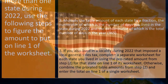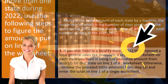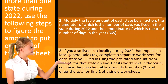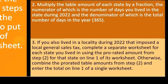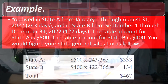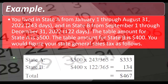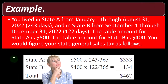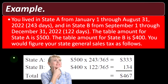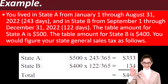Step three: if you also lived in a locality during 2022 that imposed a local general sales tax, complete a separate worksheet for each state, using the pro-rated amount from step two for that state on line one of its worksheet. Otherwise, combine the pro-rated table amounts from step two and enter the total on line one of a single worksheet. For example: you lived in State A from January 1st through August 31st, 2022 — 243 days — and in State B from September 1st through December 31st, 2022 — 122 days. The table amount for State A is $500 and for State B is $400. You take $500 times 243/365 to get $333, and $400 times 122/365 to get $134, for a combined total of $467 — weighted toward the state where you spent more time.